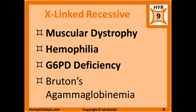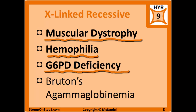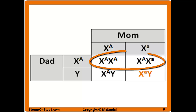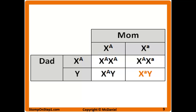A small list of X-linked recessive diseases includes muscular dystrophy, hemophilia, G6PD deficiency, and agammaglobulinemia. In the Punnett square for X and Y, you show the X or Y chromosome with a superscript for the gene locus. Consider an X-linked recessive disease where the father is fine and the mother is fine but heterozygous — a carrier for the recessive allele. In this case, 100% of daughters are going to be normal, with half being carriers and the other half having two normal alleles. For sons, 50% will be normal and 50% will be affected.